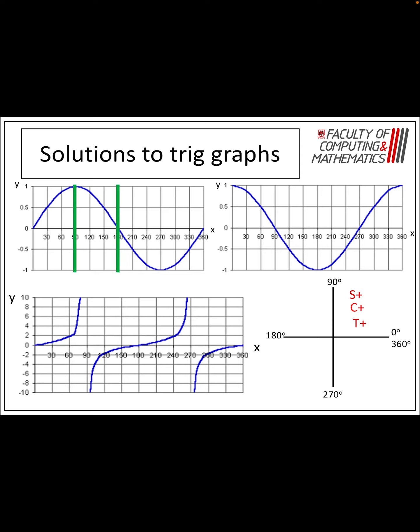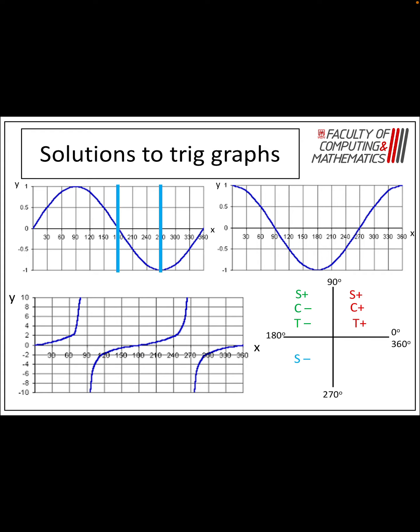Now between 90 and 180 degrees, sine is positive, the cosine wave is negative, and your tan wave is negative — so the only one that's positive in there is sine. From 180 to 270, sine is negative, it's below the x-axis. Cos is negative, again below the x-axis. But tan is positive, it's above the x-axis, and that's the only one that is positive between 180 and 270 degrees.